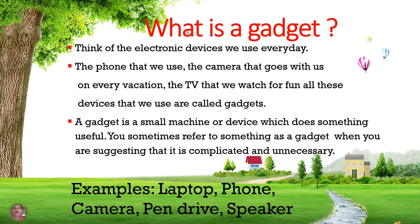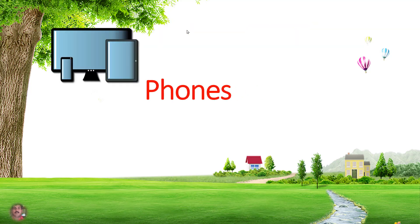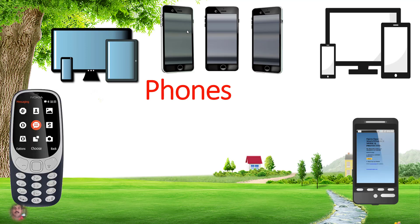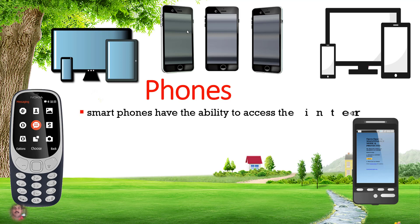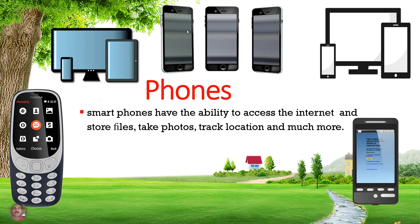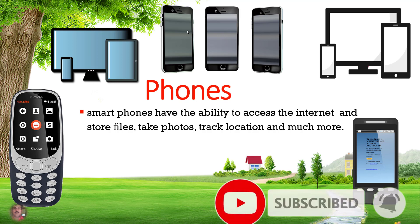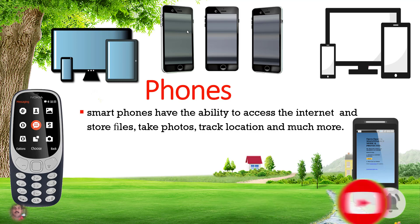What are the examples of gadgets? Laptop, phone, camera, pen drive, and speakers - these are the gadgets we learn from this lesson. What are the types of phones? They have button phones, smart phones, and different types of phones, including full screen phones. Smartphones have the ability to access the internet. We can make calls and communicate with others through photos, videos, and other options - more useful to our daily life.